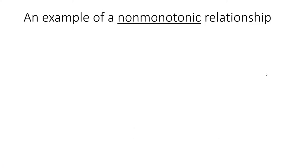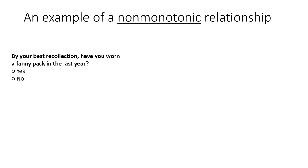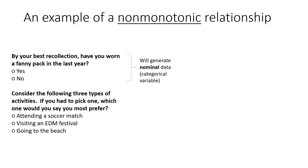But we need an example of a non-monotonic relationship. Consider the following survey questions. By your best recollection, have you worn a fanny pack in the last year? Yes or no? A simple nominal categorical measure. Consider the following three types of activities — if you had to pick one, which would you say you most prefer: attending a soccer match, visiting an EDM festival, or going to the beach? Again, this will generate nominal categorical data.